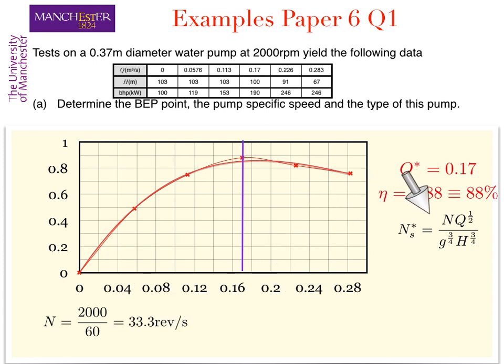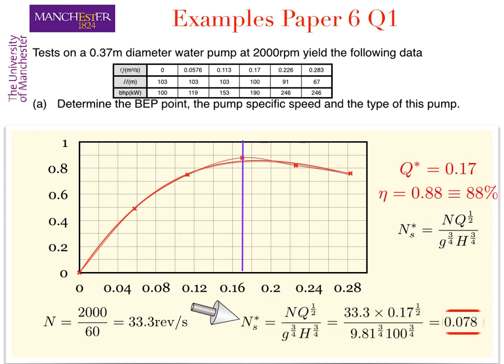Substituting this into the equation for the specific speed and the optimal flow rate of 0.17 and of course the head from the table of 100, we obtain that the specific speed is 0.078.